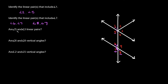Next: are angle 5 and angle 3 linear pairs? Here's angle 5, here's angle 3. Are these next to each other? No. They're not even supplementary — they're not along a straight line or anything like that. So these are definitely not linear pairs.